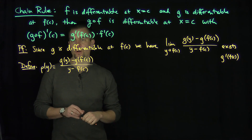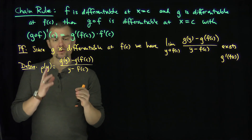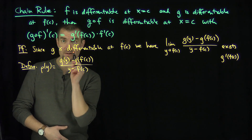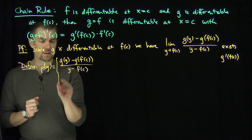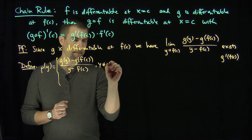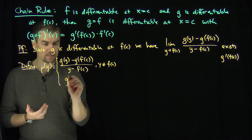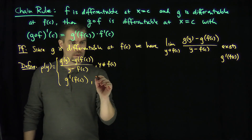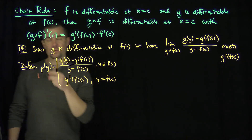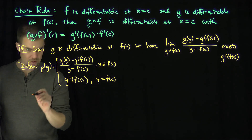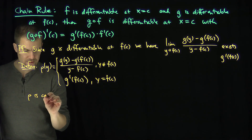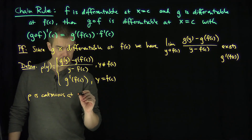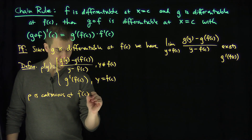Now notice that this function is not defined at y equals f of c, because plugging in y equals f of c gives zero in the denominator. But we can define rho when y is not equal to f of c using that formula, and define it to be its limit value, g prime of f of c, when y is equal to f of c. Now this function rho is a continuous function at f of c. Hence, by definition, rho is continuous at f of c.